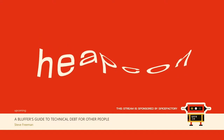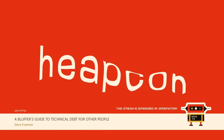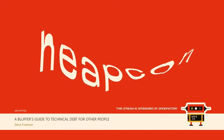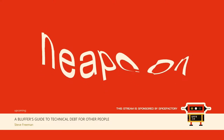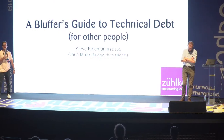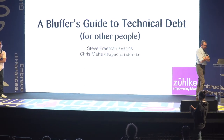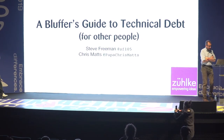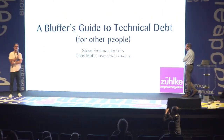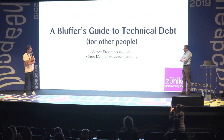Welcome back. We have Steve Freeman here with us. He is a distinguished consultant at Zulke Group and also one of the pioneers of Agile in the UK. Today he will try and solve the problem of tension between product and development. Steve, the floor is yours.